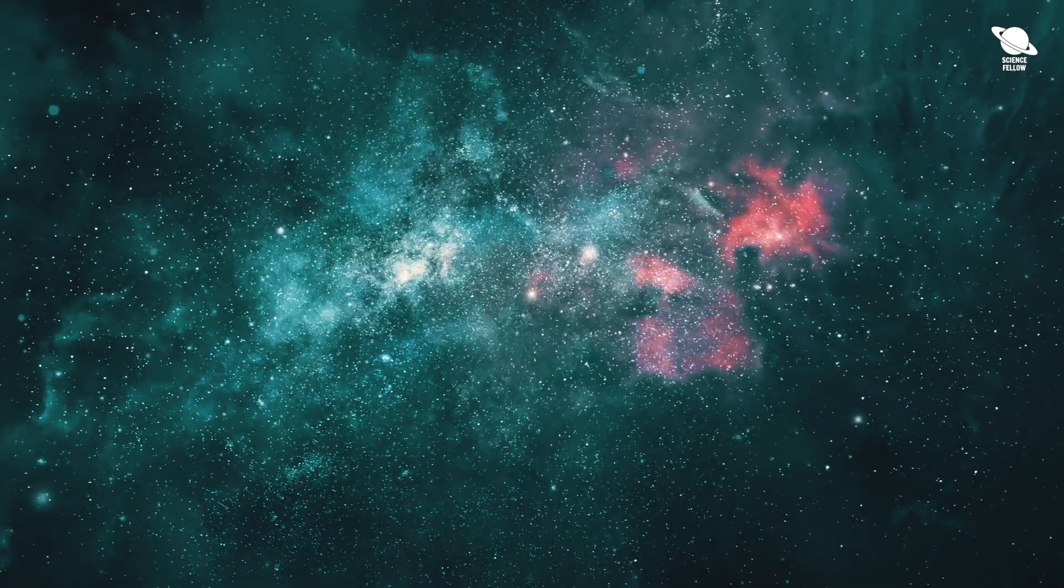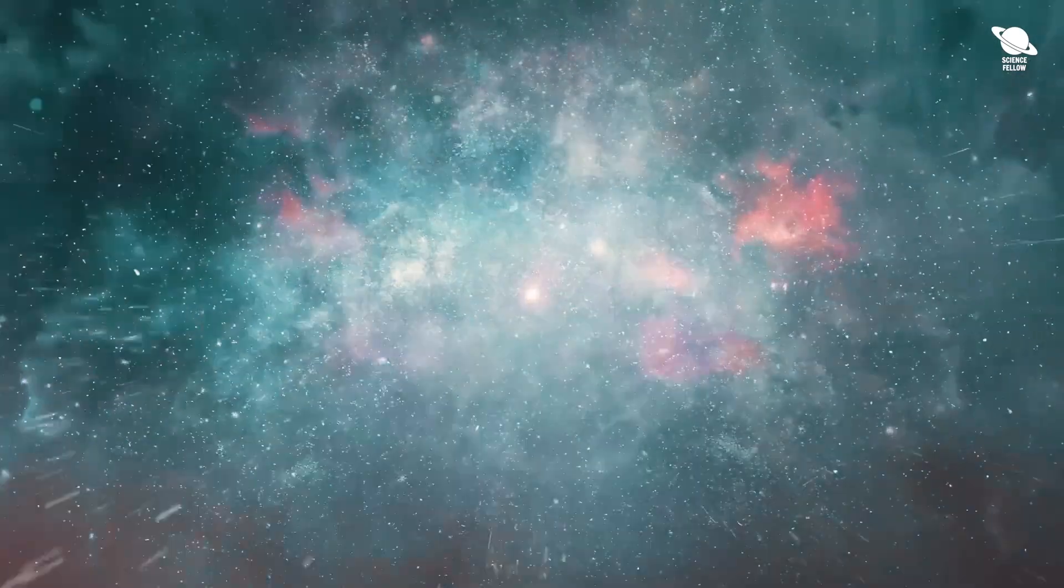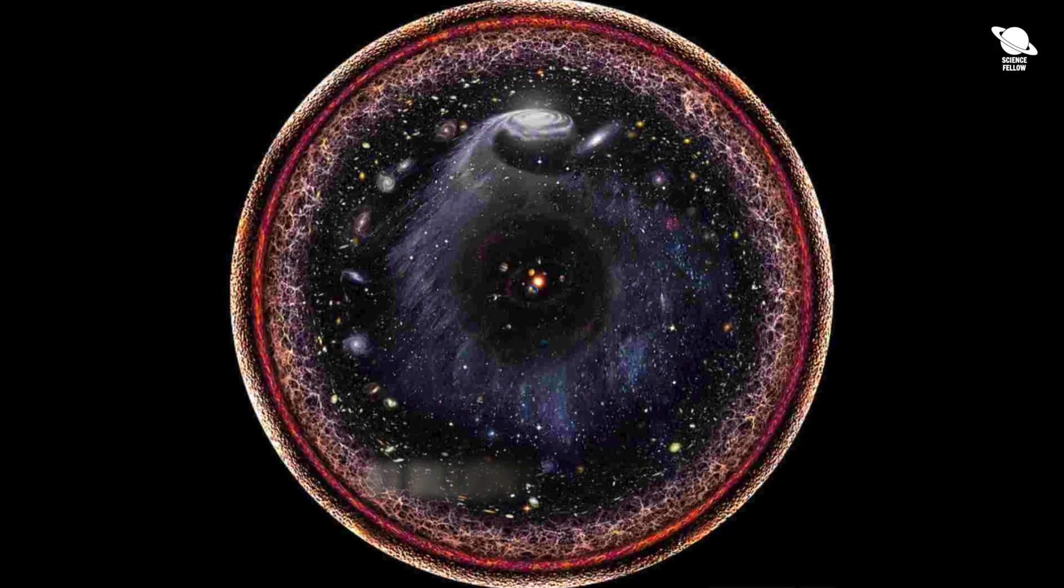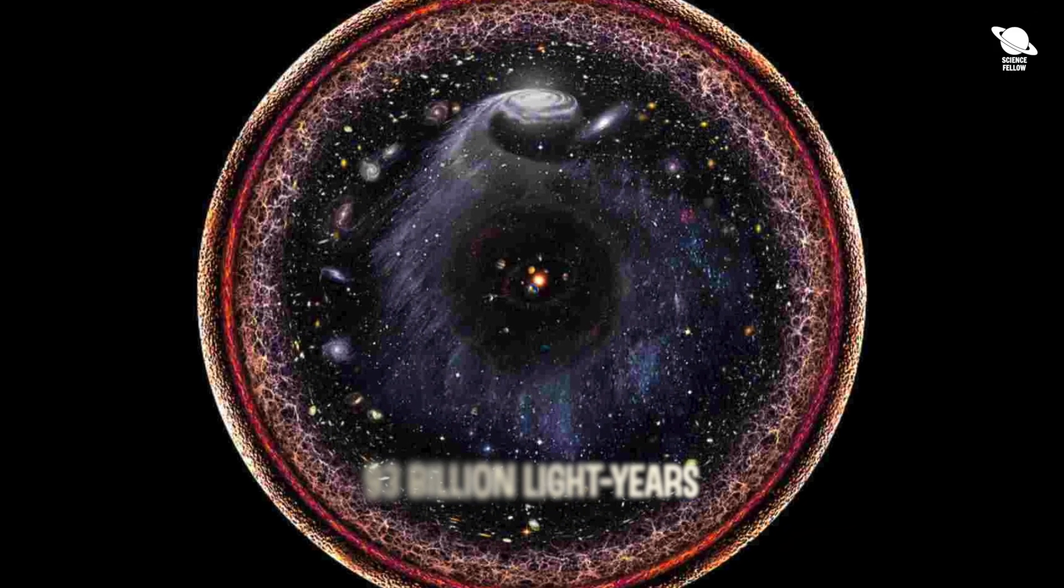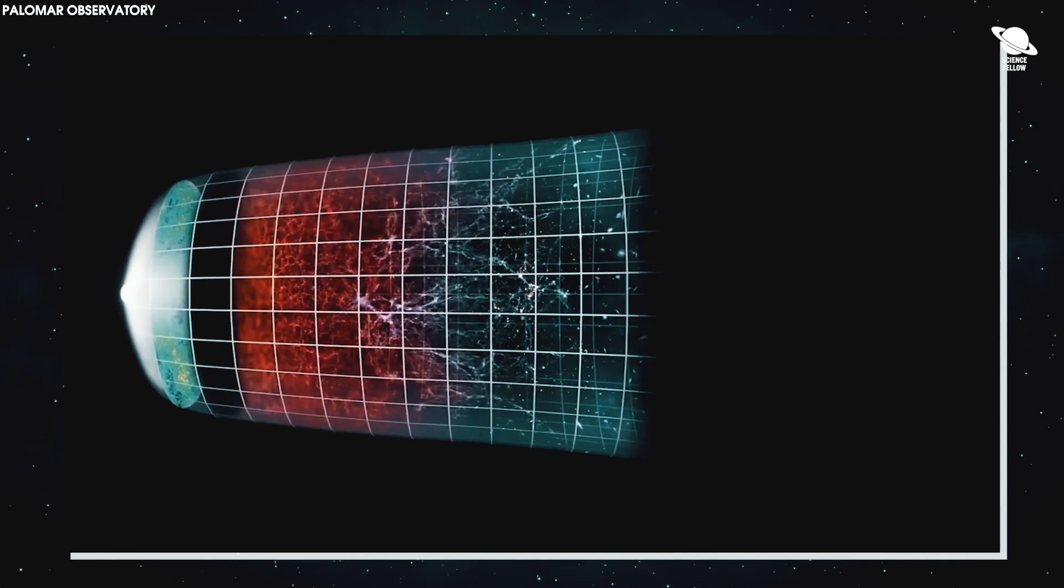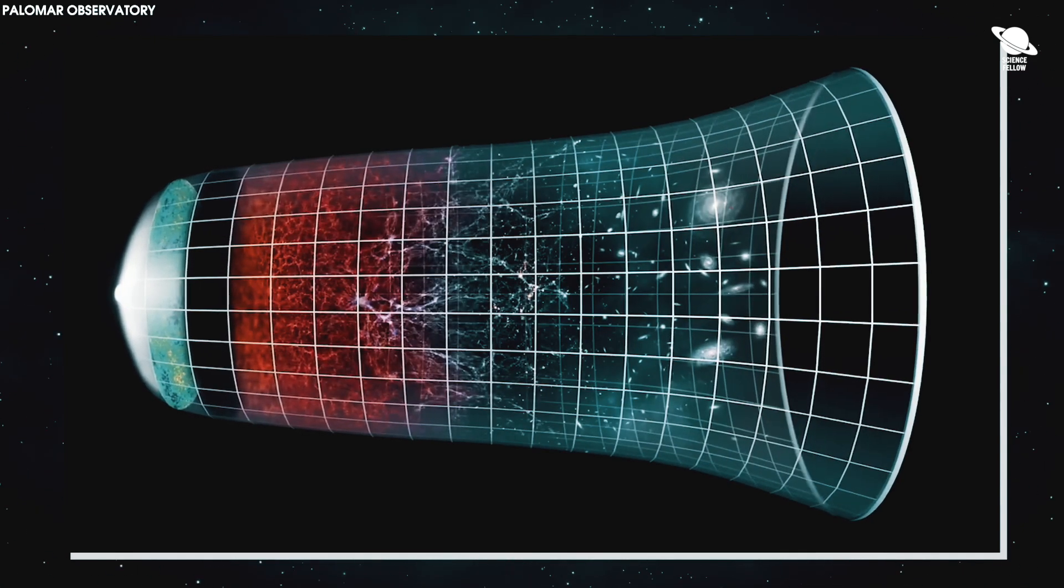The observable universe is like a massive imaginary sphere that spans 93 billion light-years around us. This boundary marks the farthest distance we can see galaxies or stars.